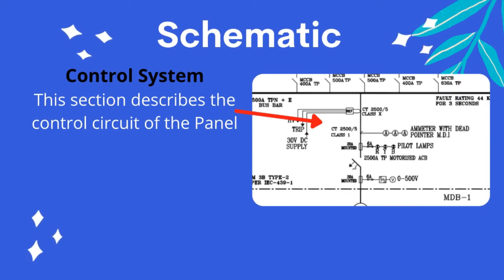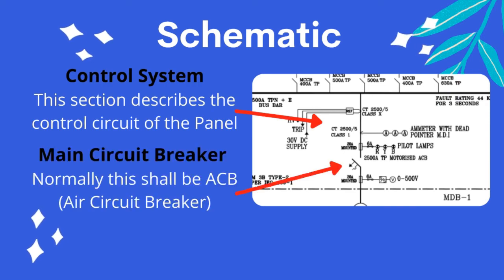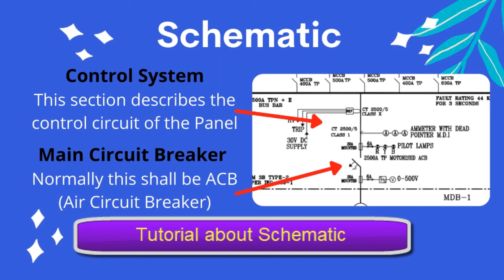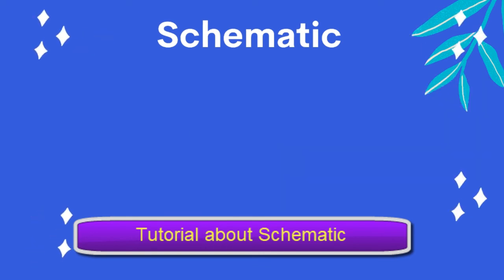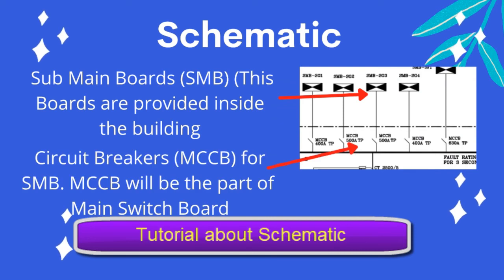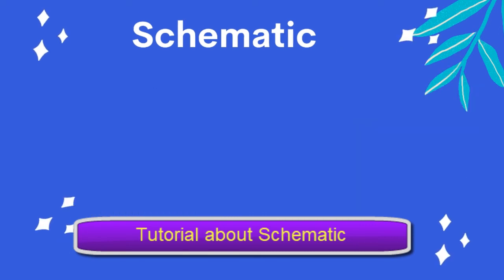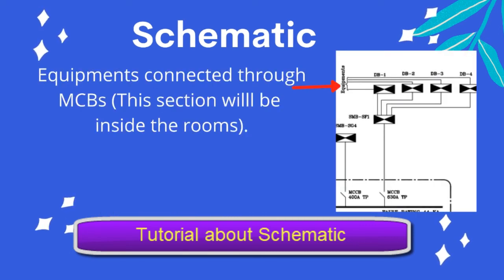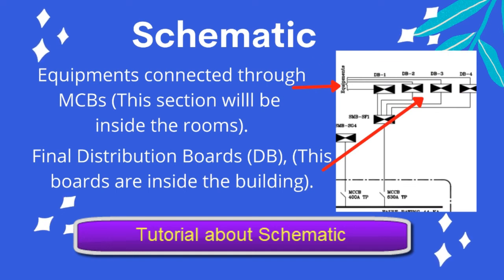The control system section describes the control section of the panel. The main circuit breaker — normally this breaker shall be an ACB — is also shown. The sub-main distribution board and final distribution board are fixed inside the building. Power from the main panel connects to the SMB through circuit breakers. Equipment used in the building is connected to the final distribution board, which is connected from the sub-main boards.